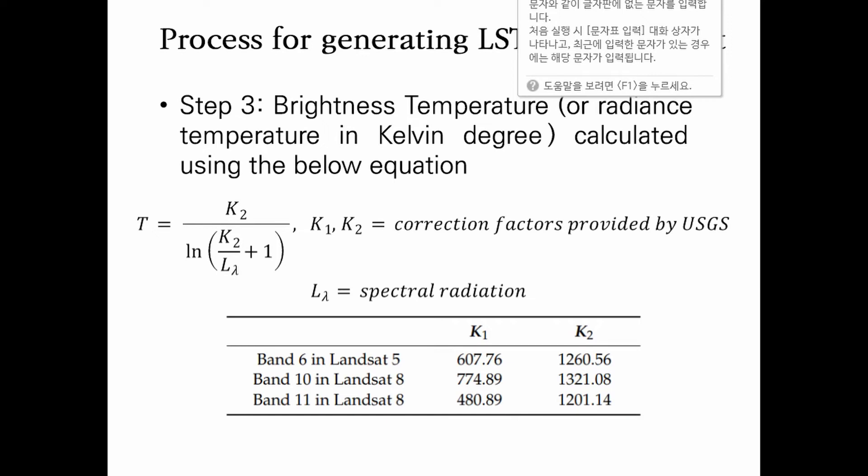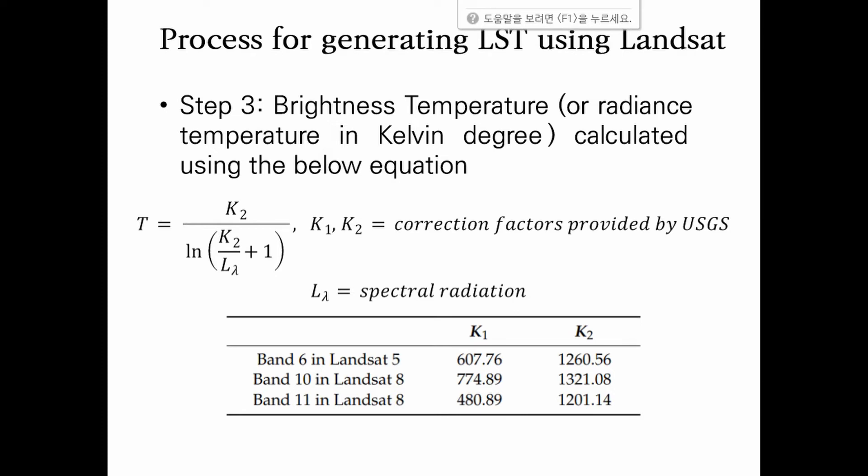In Step 3, brightness temperature — also called the radiance temperature in Kelvin — is calculated using the equation below. In this equation, K1 and K2 represent the correction factors provided by USGS, and L represents the spectral radiance calculated in the previous step. K1 and K2 have different values for different thermal infrared bands — for example, Band 6 in Landsat 5, and Band 10 or Band 11 in Landsat 8. You can choose the appropriate K1 and K2 values depending on the thermal infrared band you use.